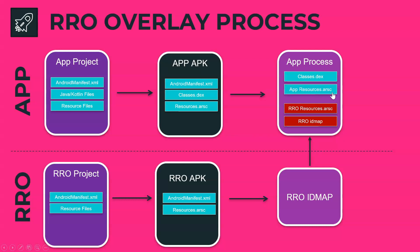In short, during runtime the app process looks at the RRO id map, gets the right overlayable resource ID, and overlays that resource on top of the app resources.arsc. That's how an RRO overlay process works on a very high level.